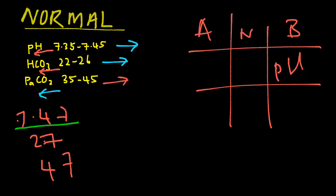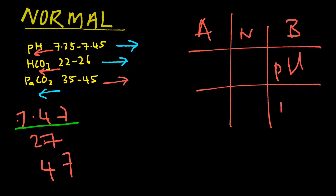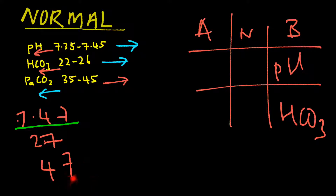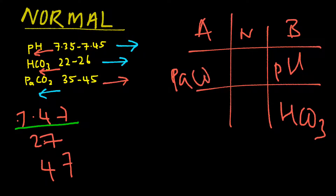Next, we have 27 for HCO3. 27 falls under the alkaline category as well, so for HCO3 we put it under alkaline. Lastly, for PaCO2 the result is 47, and 47 falls under the acidic category. PaCO2.